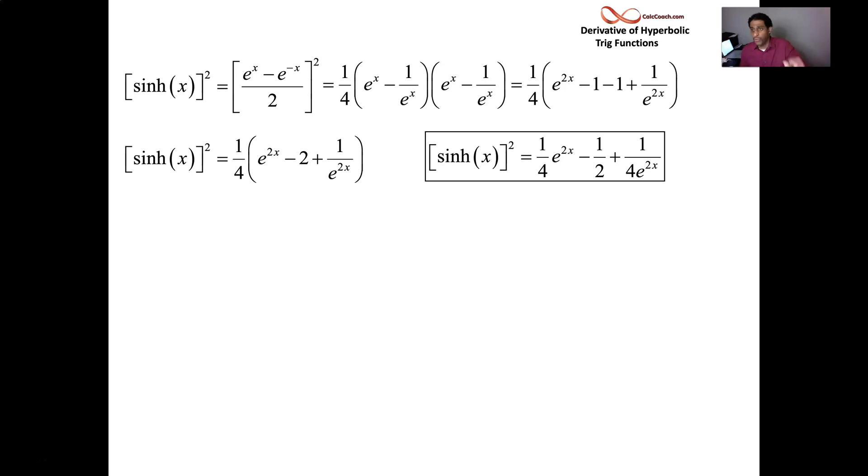So that's what we get for hyperbolic sine. We can put the 1 fourth on the inside. Hyperbolic sine squared is equal to that.